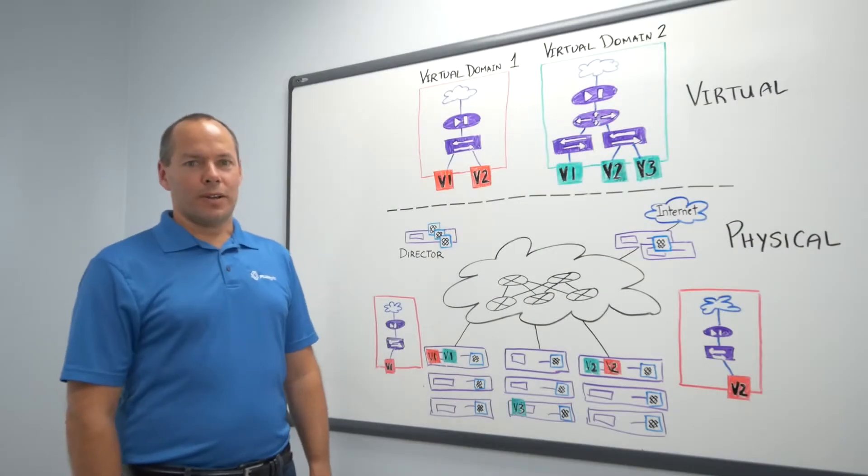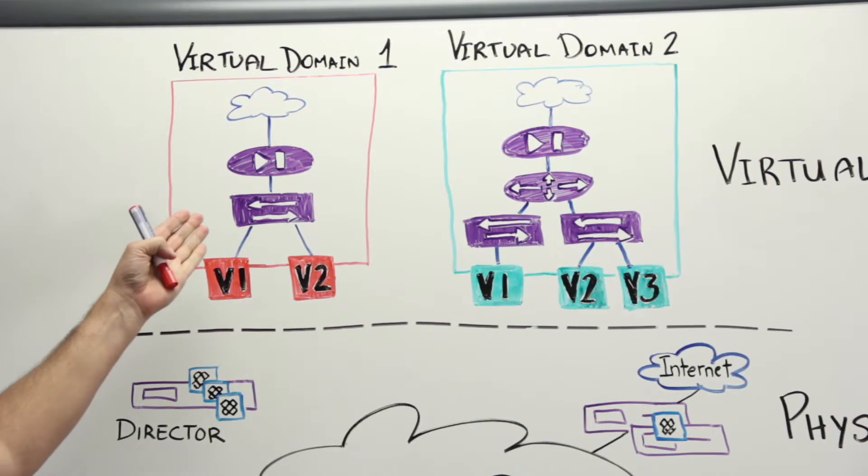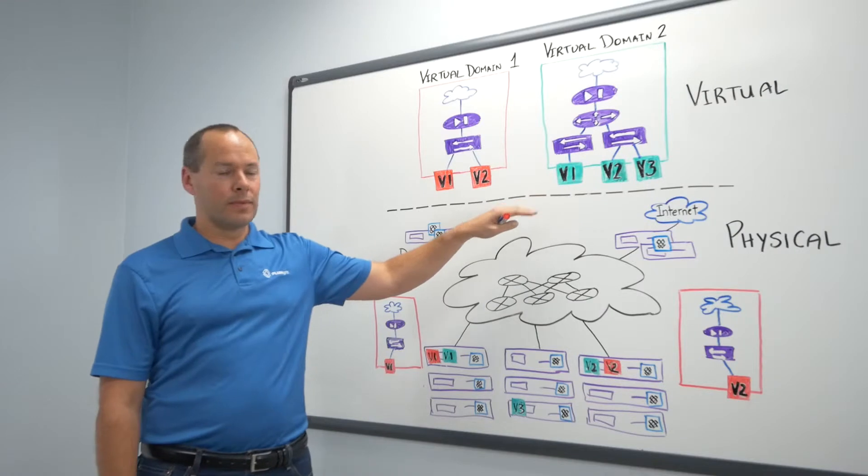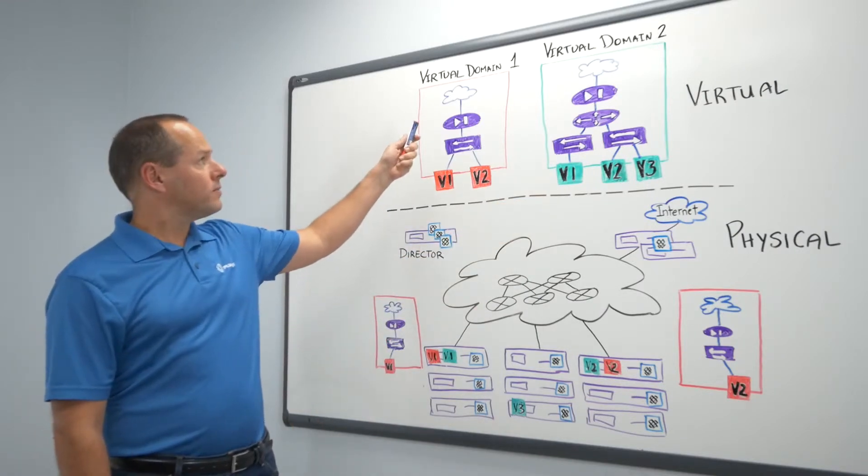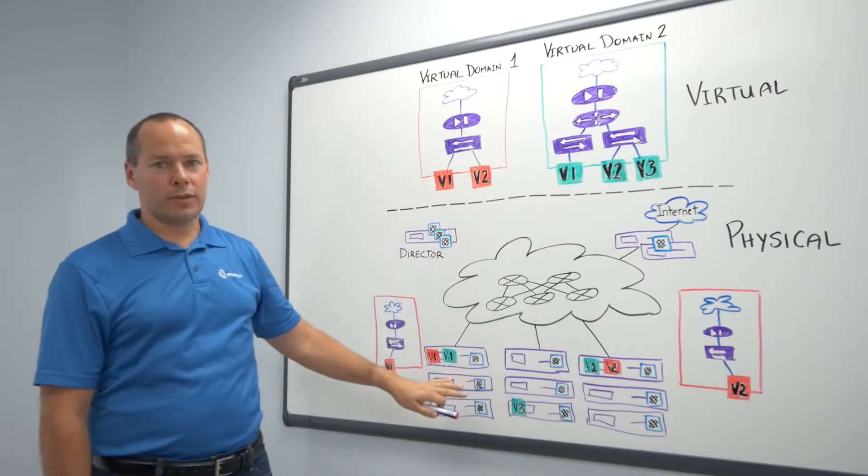So here we're going to look at an OpenStack deployment where we have the virtual infrastructure above this dotted line and then the physical infrastructure below the dotted line. We're also looking at two tenants, virtual domain 1 and virtual domain 2, implemented with physical infrastructure below the line.